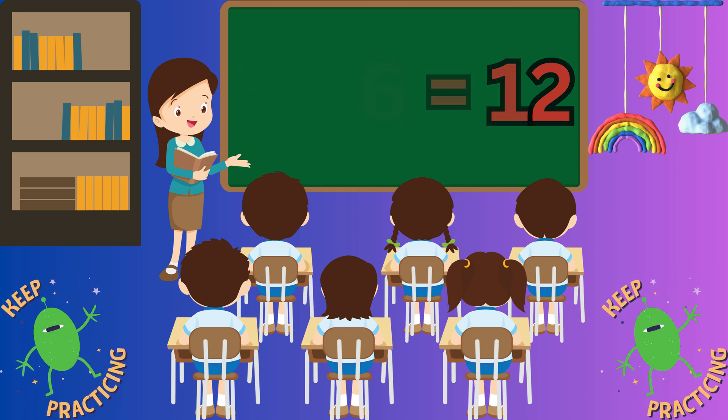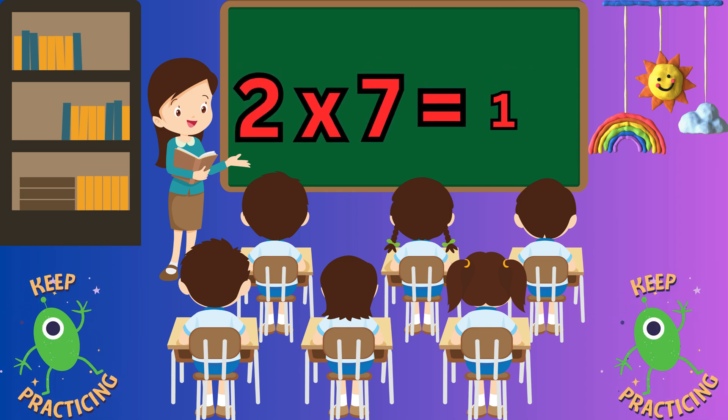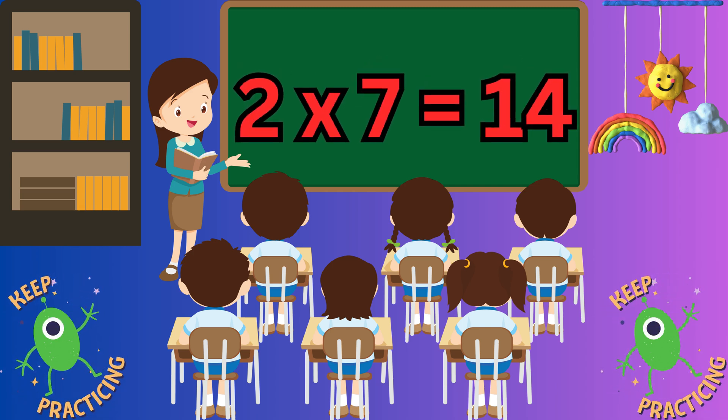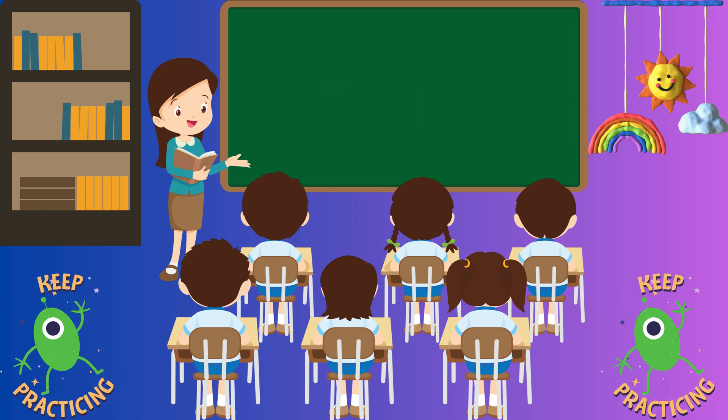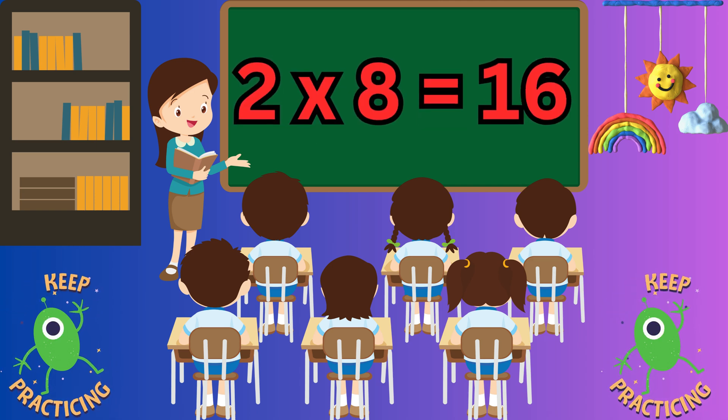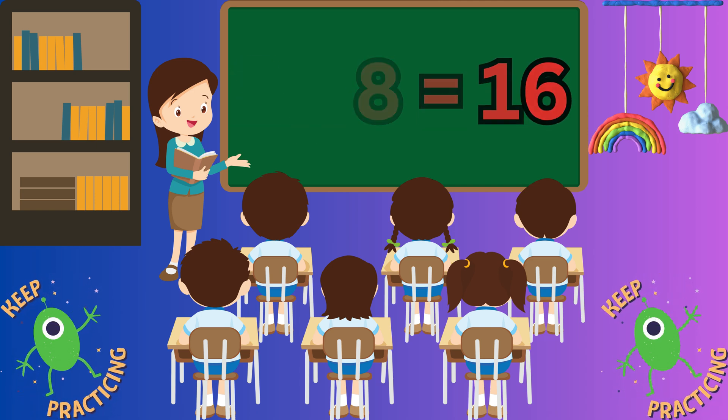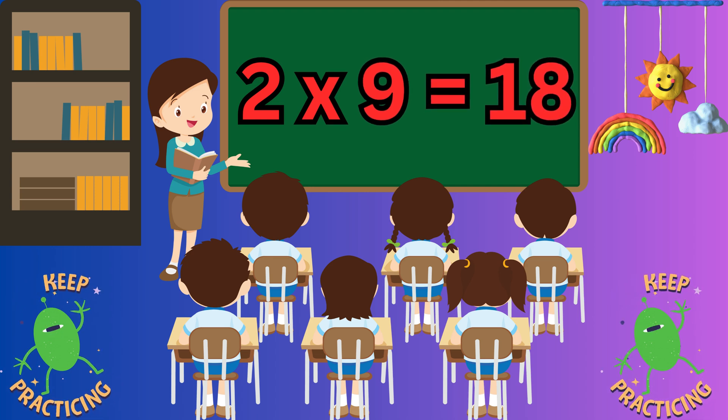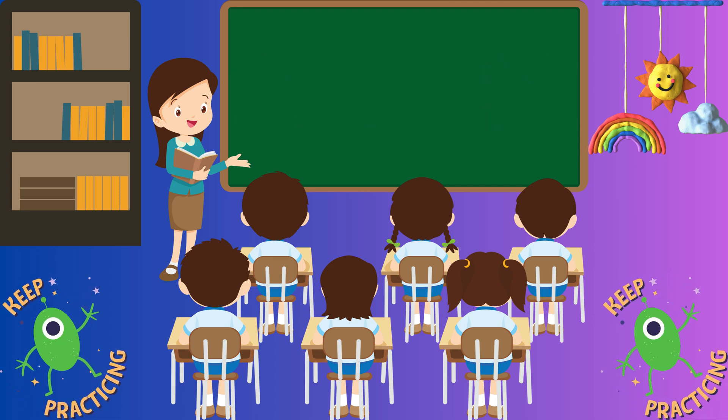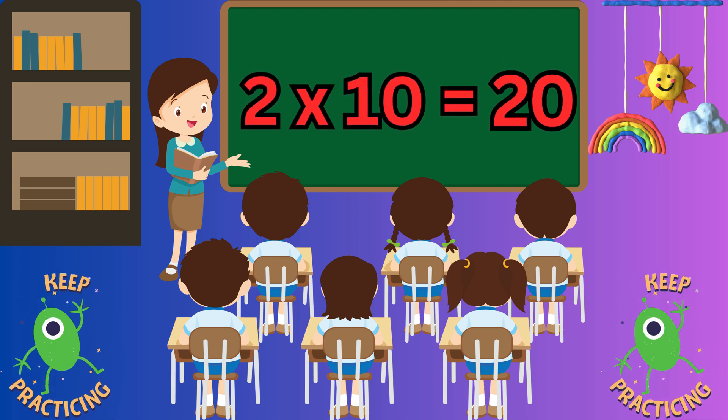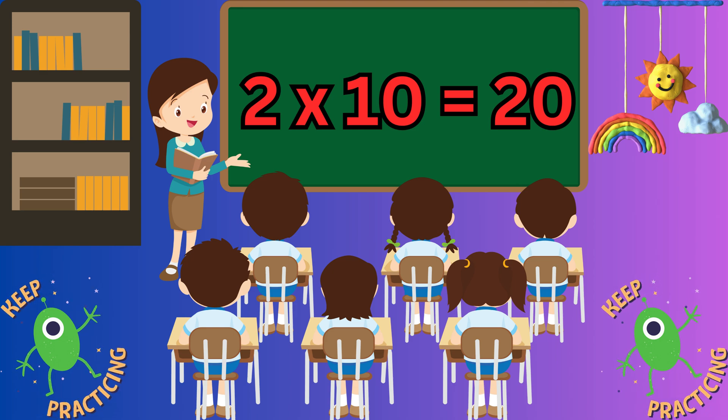Two sevens are fourteen. Two sevens are fourteen. Two eights are sixteen. Two nines are eighteen. Two nines are eighteen. Two tens are twenty. Two tens are twenty.